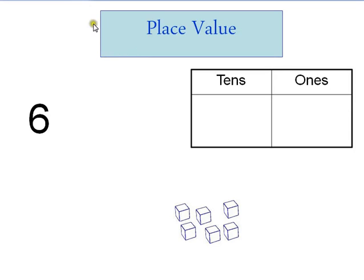We're going to look at place value today. Place value tells us, if we have numbers, where those numbers are tells us what those numbers mean. So if we just have one digit right here, which is just a six, that means we have six ones.